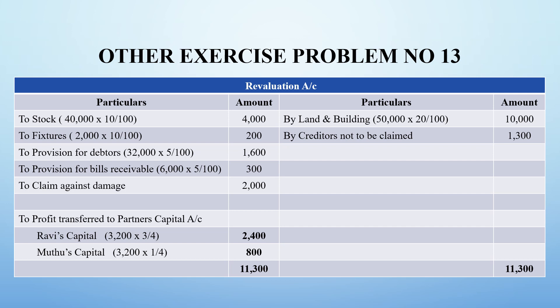A 5% reserve for doubtful debts is to be created on debtors. No provision existed previously, so we create a 5% provision: Rs. 32,000 × 5/100 = Rs. 1,600. For bills receivable of Rs. 6,000, 5% gives Rs. 300. So the provision for debtors is Rs. 1,600 and for bills receivable is Rs. 300.